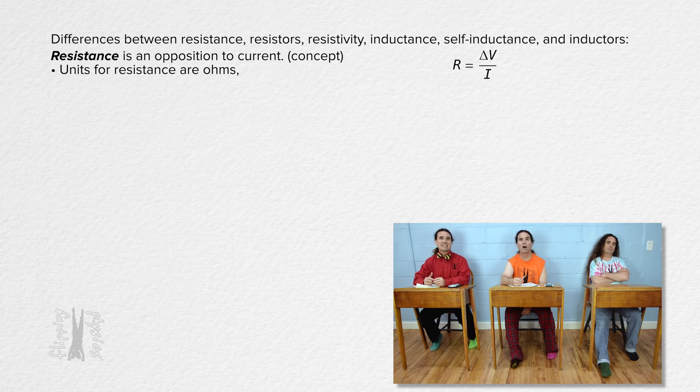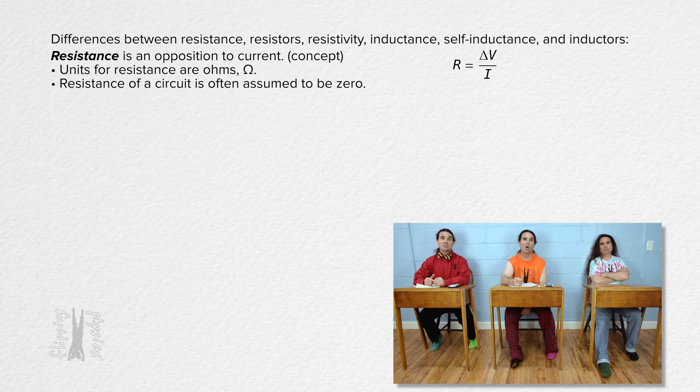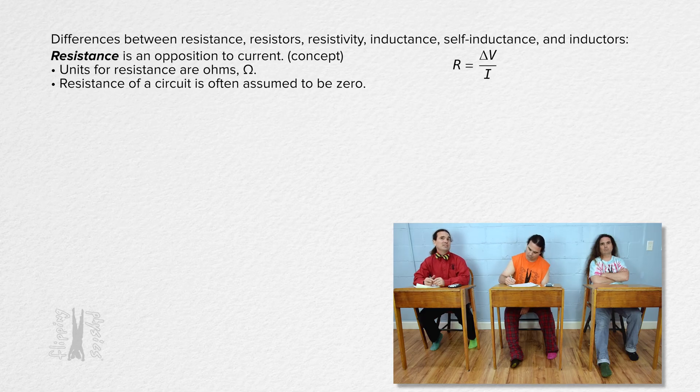The units for resistance are ohms and the symbol for ohms is a capital omega which looks like an upside down horseshoe. And we often assume the resistance of a circuit is zero because we generally assume all wires have zero resistance.